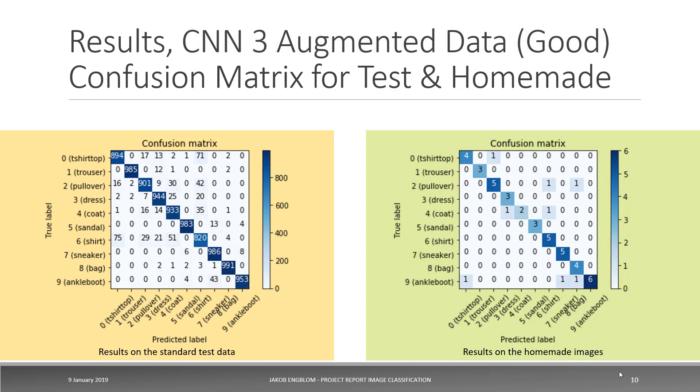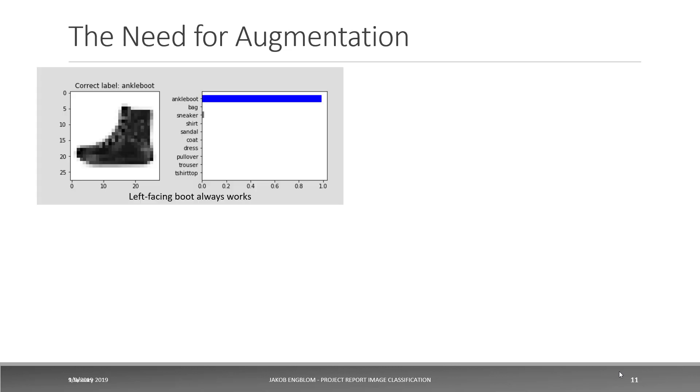The best model, CNN model three with augmented data, has a much cleaner looking confusion matrix. Essentially, the more data you have on the diagonal, the better the model is. You really would like everything to be like a thousand on the standard data set, so this gets really close to that. On my homemade images, this also does a really good job, as you can see. There are a few misses, but honestly, this is a really nice result.